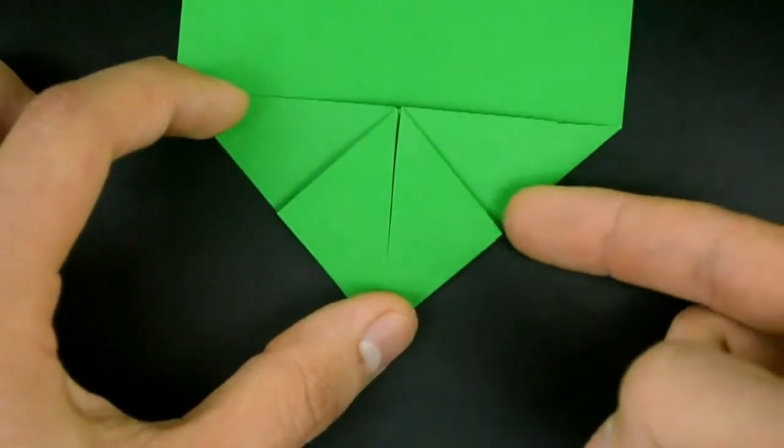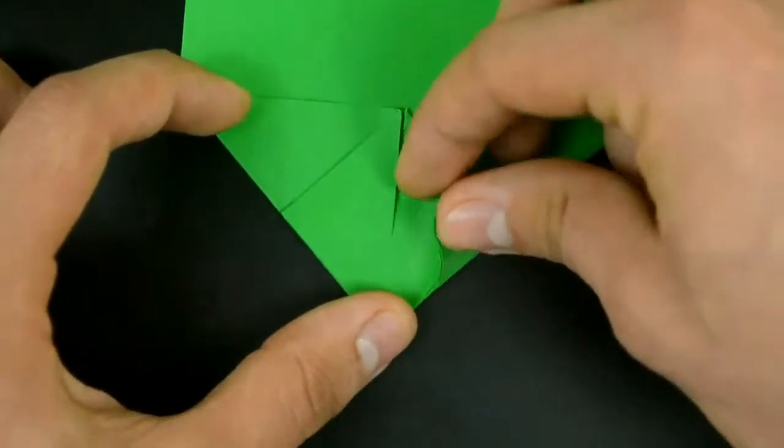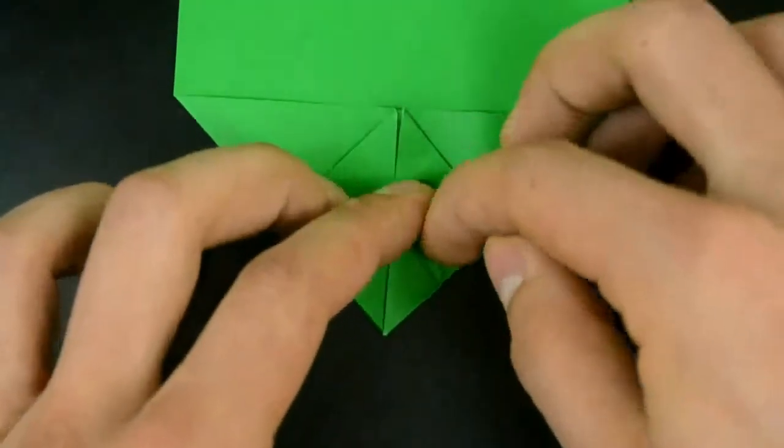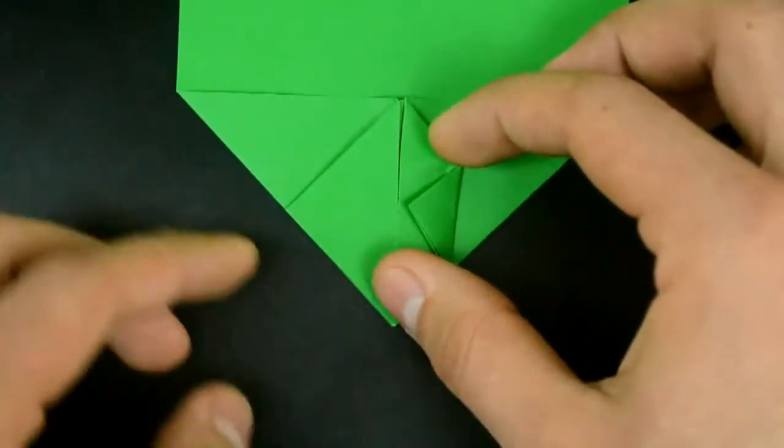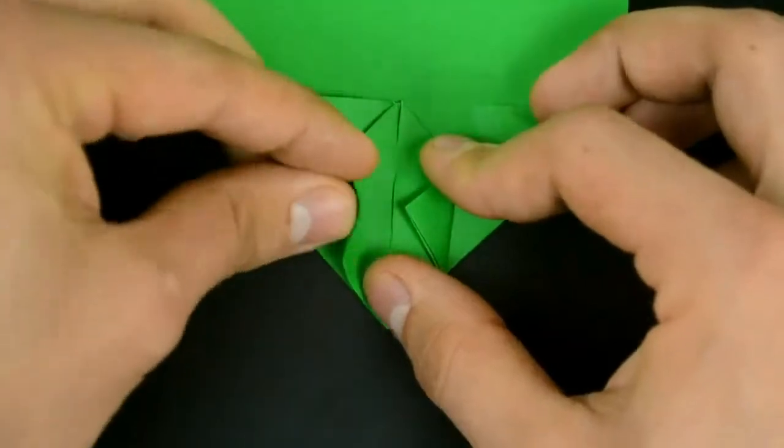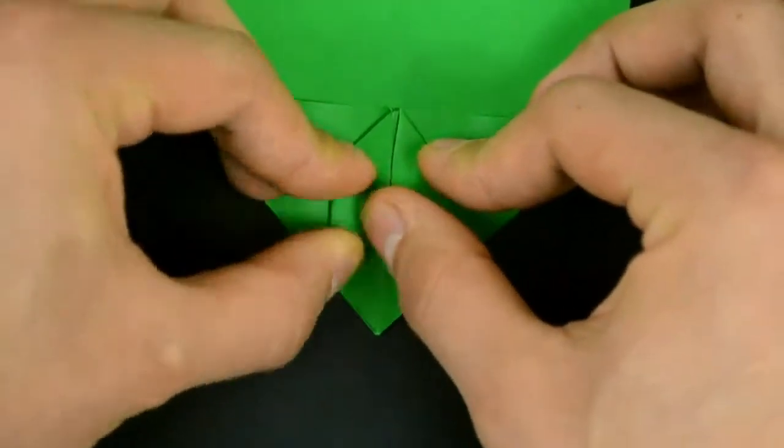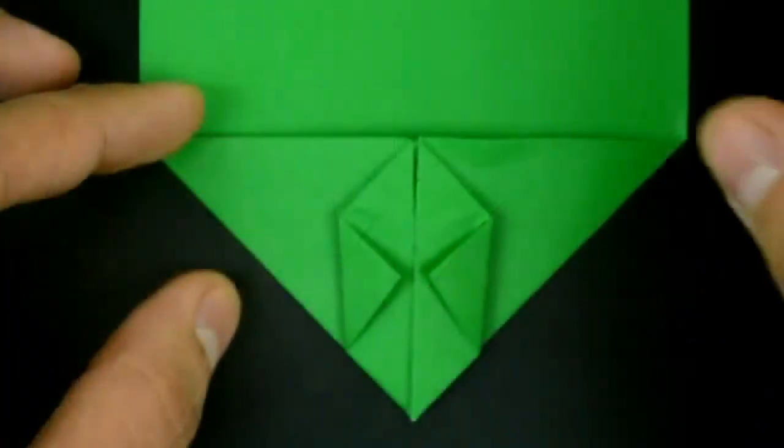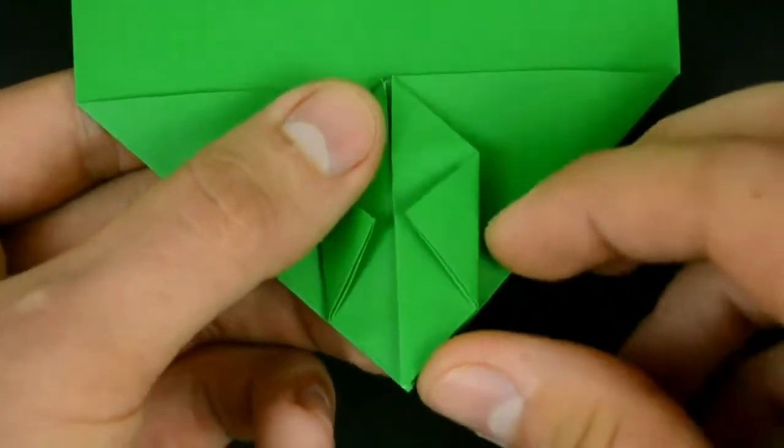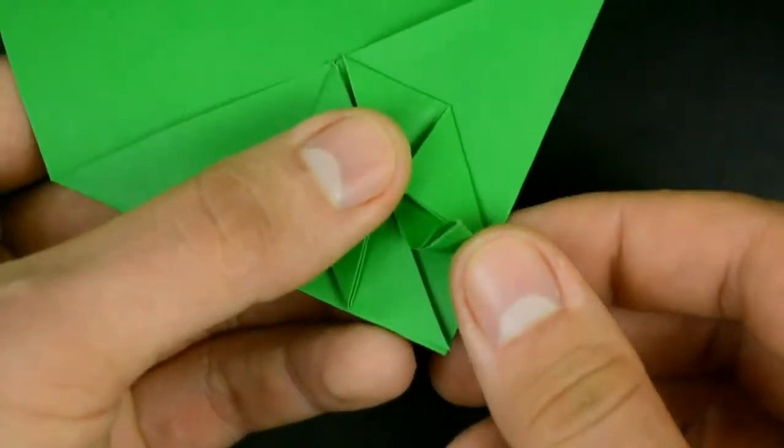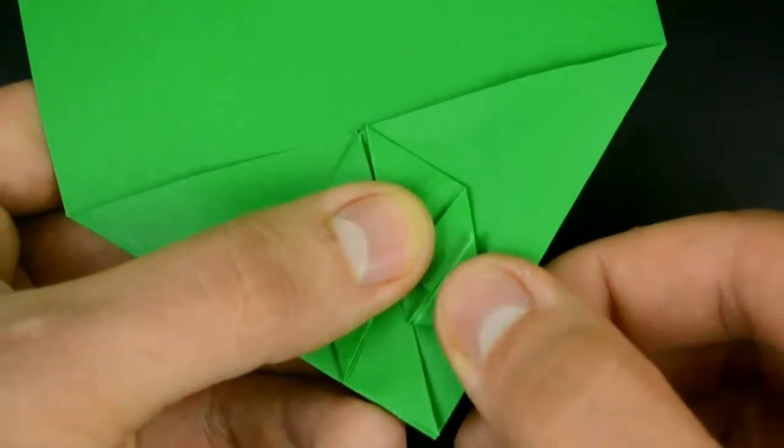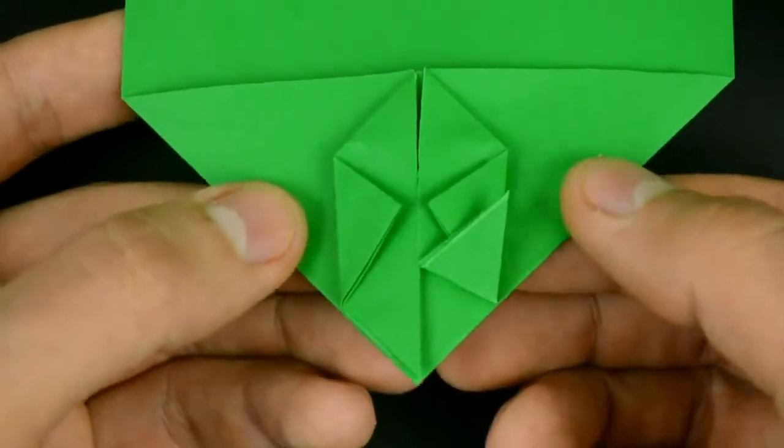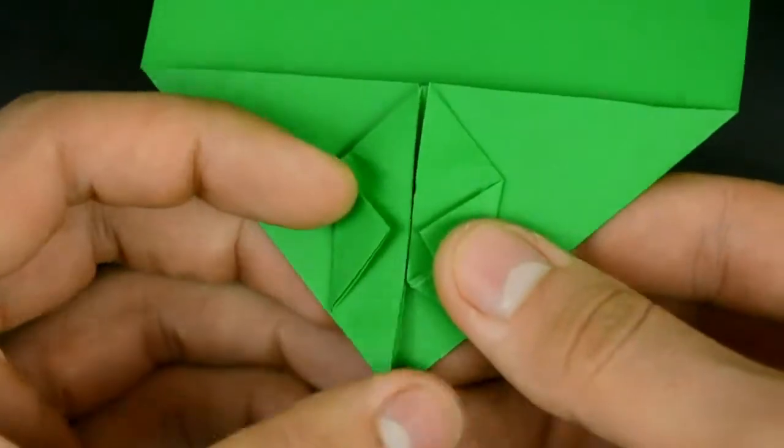Now fold this corner to the middle. And also the other one. Now fold this little flap on the bottom to the right side, in line with this edge here. Do the same on the other, as accurate as possible.